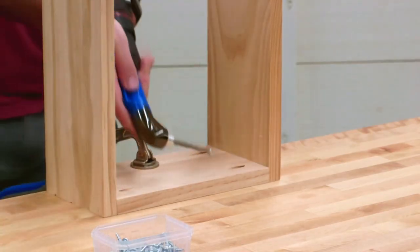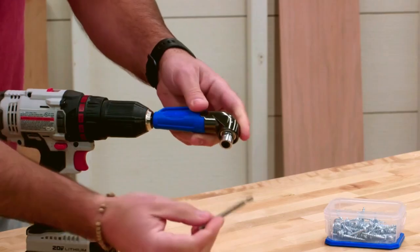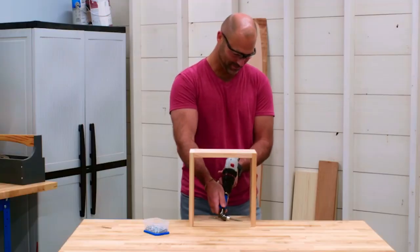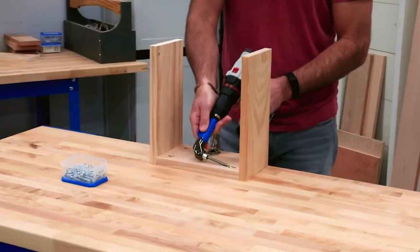The 90 degree pocket hole driver chucks into any drill to turn it into a 90 degree driver. Just insert the hex shank, tighten the drill chuck, and that's it. Now you'll be able to reach into places where the whole drill won't fit.